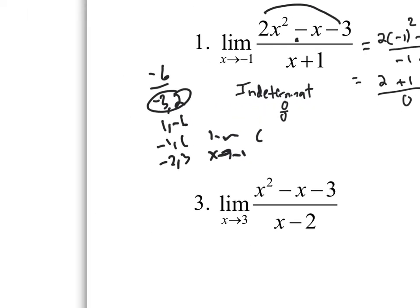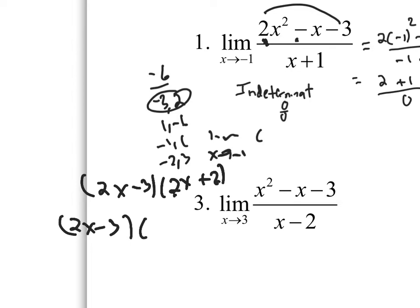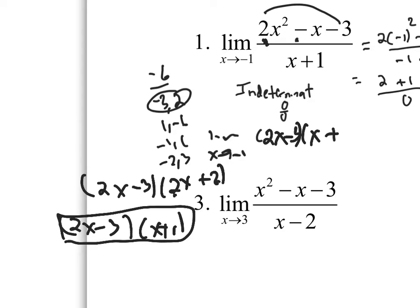So the limit as x approaches negative 1. Using my method of keeping the leading coefficient, we get 2x minus 3 times x plus 1. Since both factors have a 2, the actual factored form is (2x minus 3)(x + 1). Writing it over the denominator (x + 1), there's cancellation — the (x + 1) terms cancel.